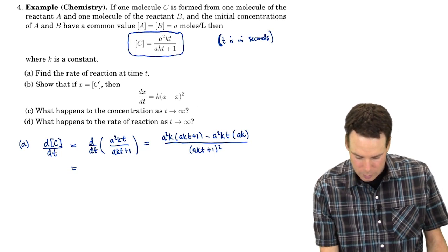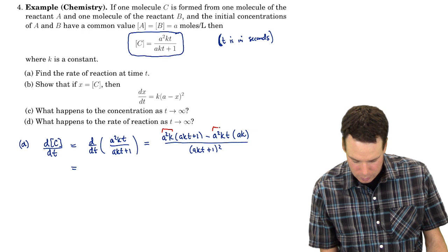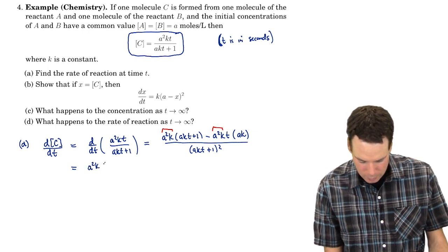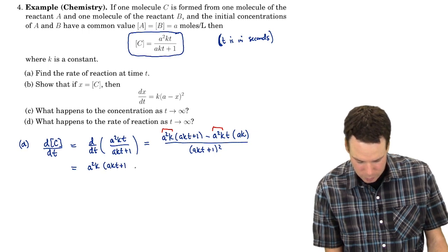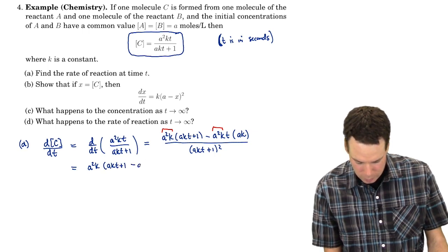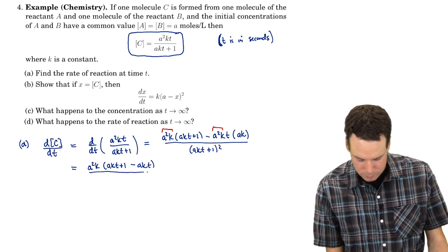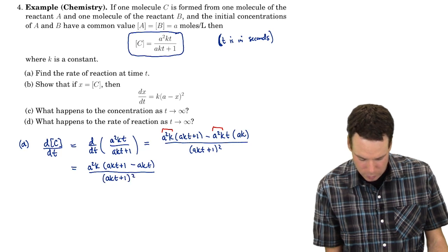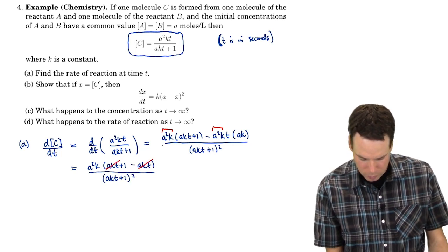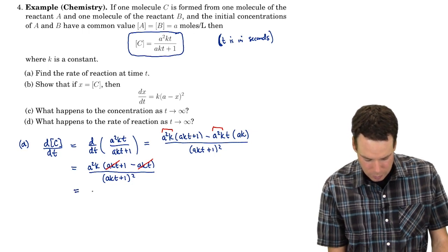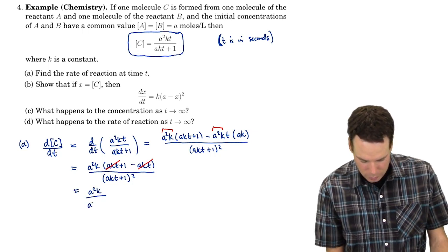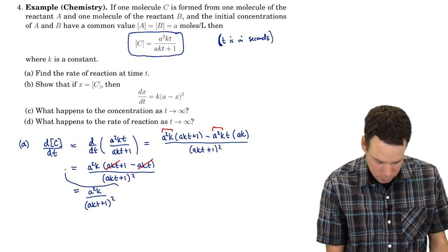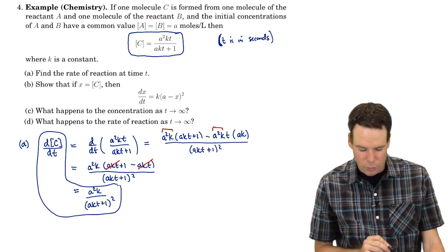We've got an a squared k in common in both those terms. So I can factor that all the way out front and I'm left with akt plus 1 minus akt. Well, that's over akt plus 1 squared. So I can cancel those ones off and that gives me an a squared k all over akt plus 1 squared. So there is our rate of reaction.